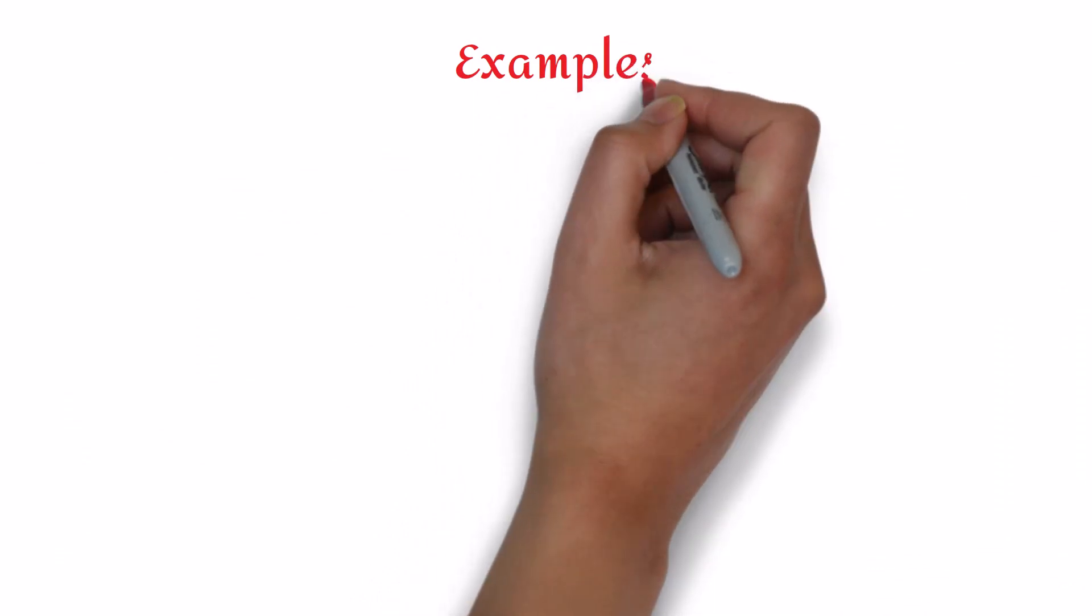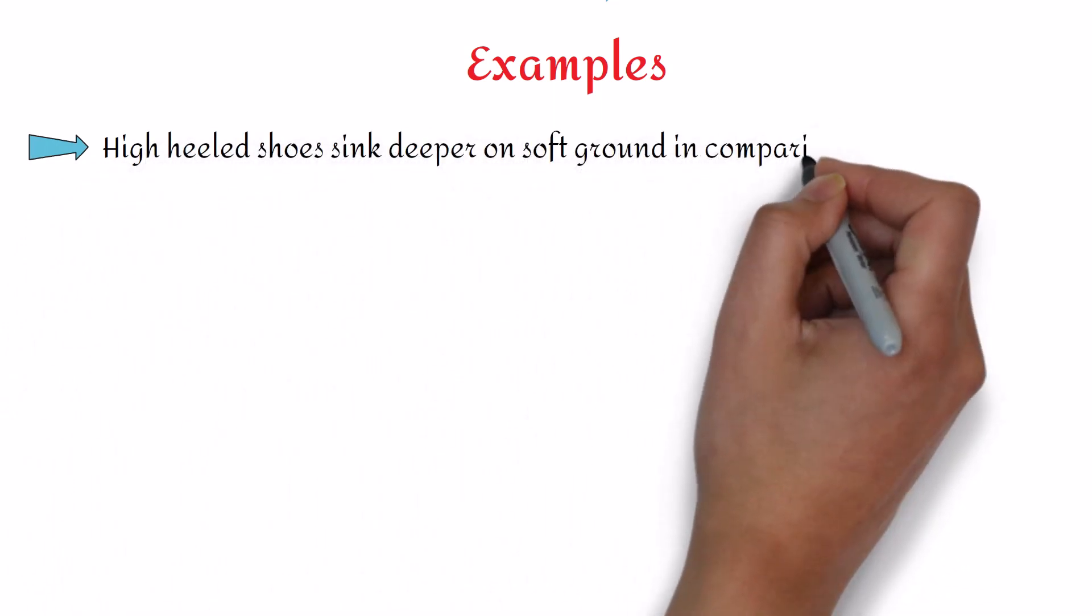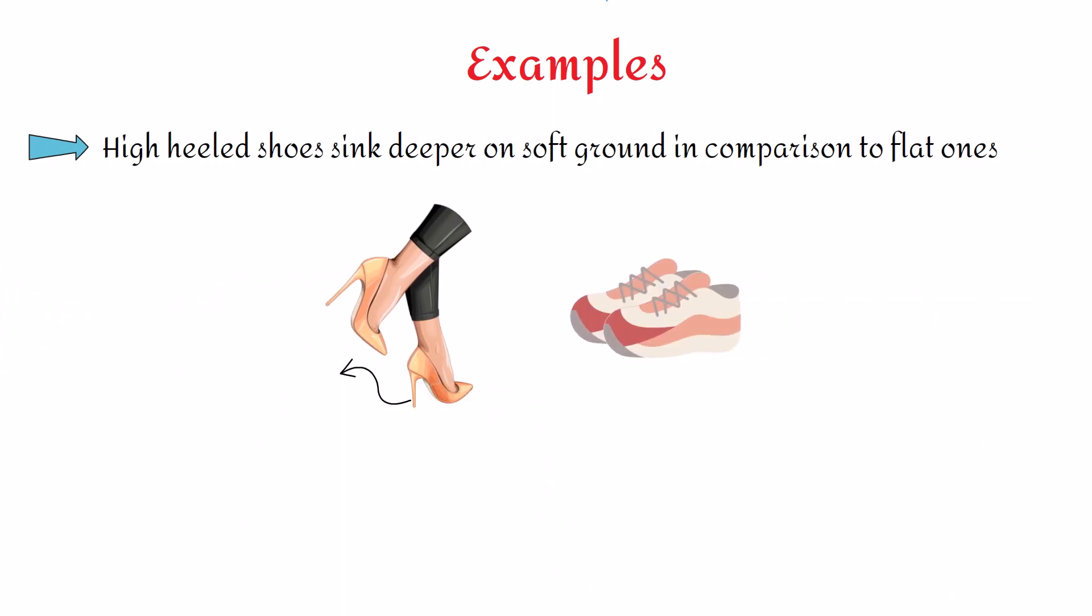This can be explained with the help of two examples. Now our first example is of high heeled shoes. We know that high heeled shoes sink deeper on soft ground in comparison to flat ones.